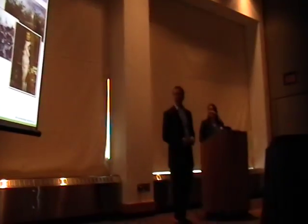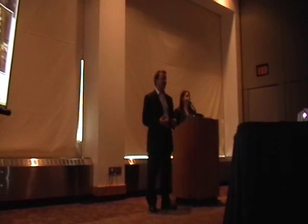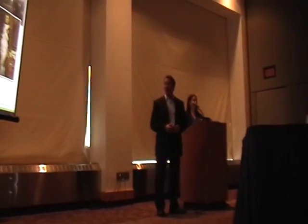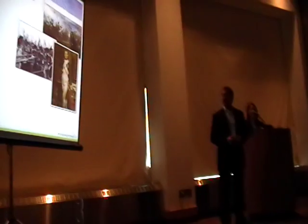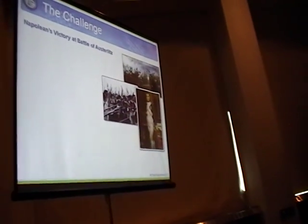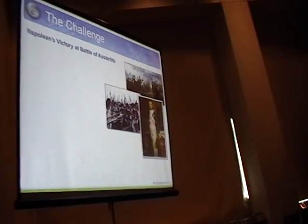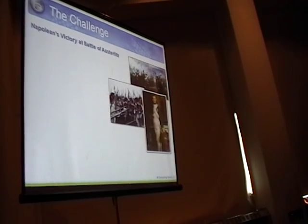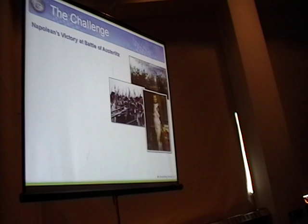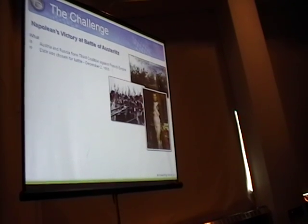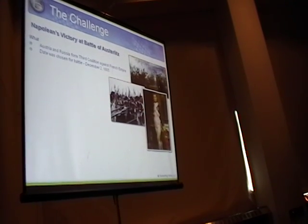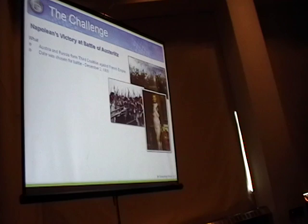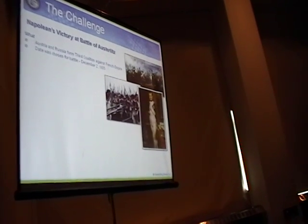We're going to start off the main part of our presentation with a little bit of a history lesson. We're talking about Napoleon's victory at the Battle of Austerlitz back in the early 19th century. Napoleon Bonaparte had grand ambitions for expanding his empire, and no single nation was really able to stand up to the French forces that he built, so the Austrians and Russians formed the third coalition to stand up against the French Empire.